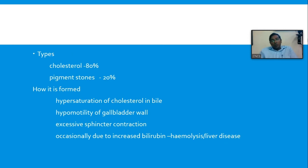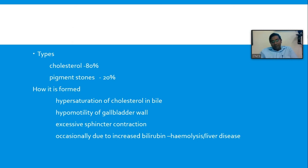As you may have already learned, most gallstones are predominantly cholesterol stones, and the rest are predominantly pigment stones or bile stones. Cholesterol stones are large, green or yellow, and faceted. Pigment stones are usually small and dark brown or black in colour. Having said that, the majority of stones are mixed stones, but the predominant component in the majority is cholesterol.